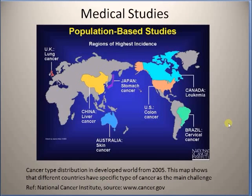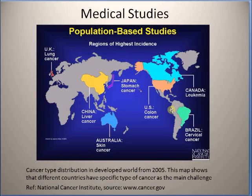The next example is medical studies. This map basically shows cancer distribution in different parts of the world. From this type of study, we can clearly see that different countries or different regions have different types of cancer as a major challenge. For example, Japanese have stomach cancer as a major issue, Americans have colon cancer as one of the major problems, and Canadians have leukemia, that is a blood cancer, as one of the major problems. This type of study gives us geographical information about the process under study. This image is acquired from the National Cancer Institute website.